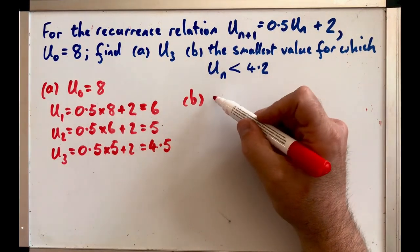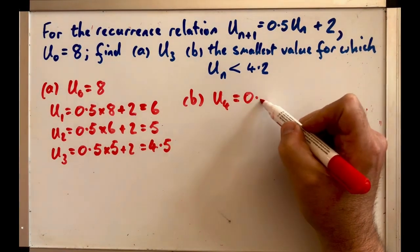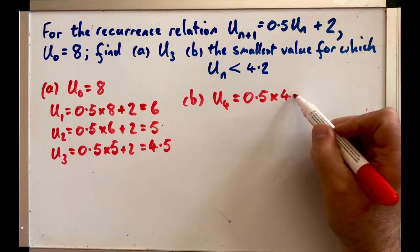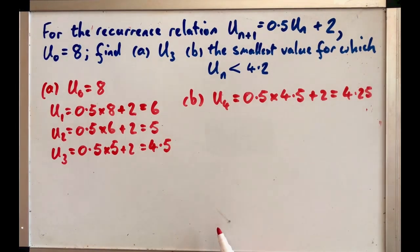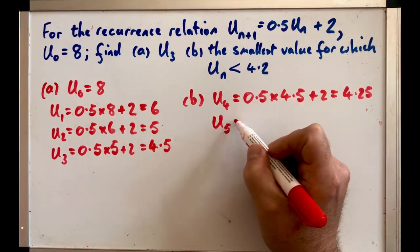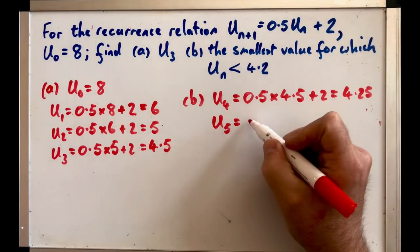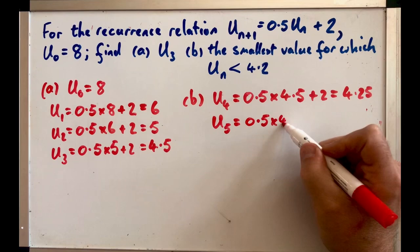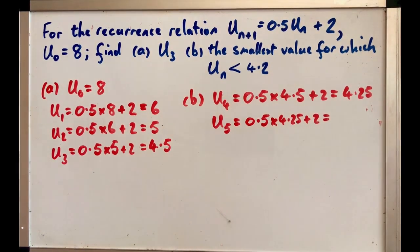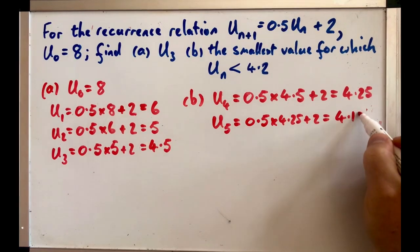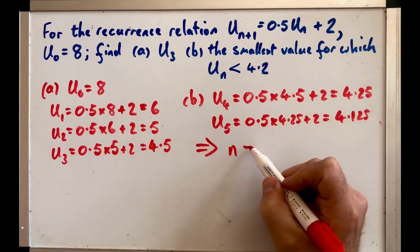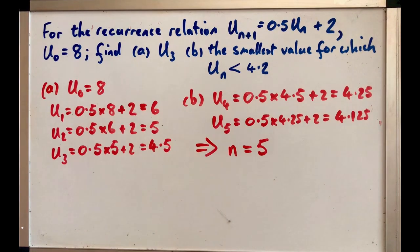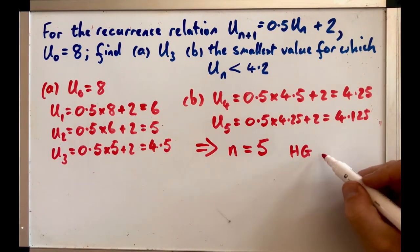So all we're going to do is we're going to look at U₄ next. Now that's 0.5 times 4.5 plus 2. If we work that out that is 4.25, still too big so we want the next one. And that gives us 0.5 times 4.25 plus 2 and if we work that out it'll give you 4.125. Now that is smaller than 4.2, therefore we can say the value of n that we want is 5. Now if you want some practice questions in the Hodder Gibson which are similar to this, remember it's Hodder Gibson page 21 exercise 2.2.